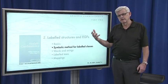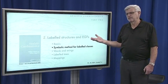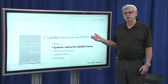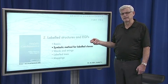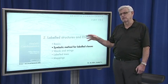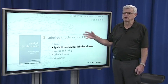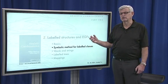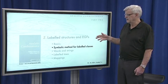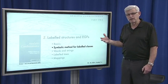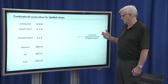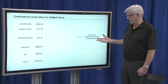Next we're going to look at the full set of basic operations that we're going to use to make labeled classes, and the symbolic method, which is the association from those constructions to generating function equations. This very much parallels what we did for unlabeled classes in the other setting.